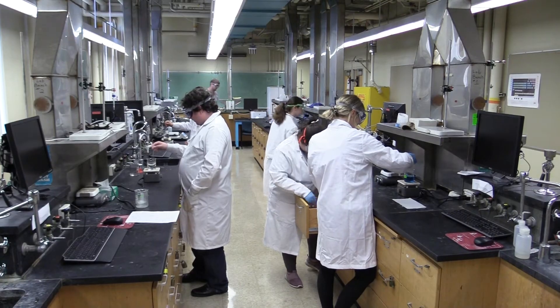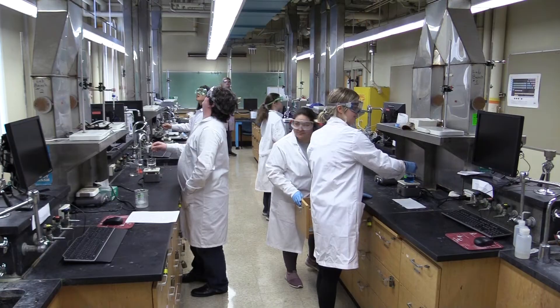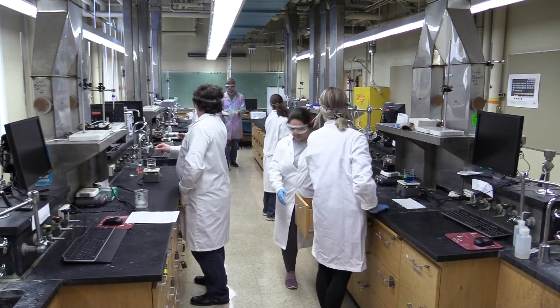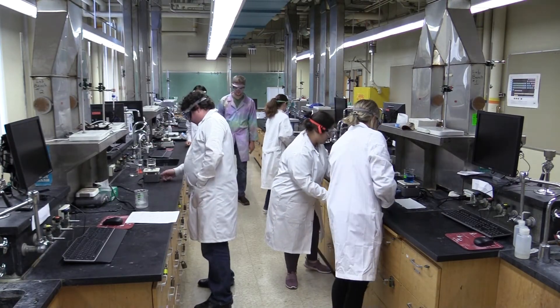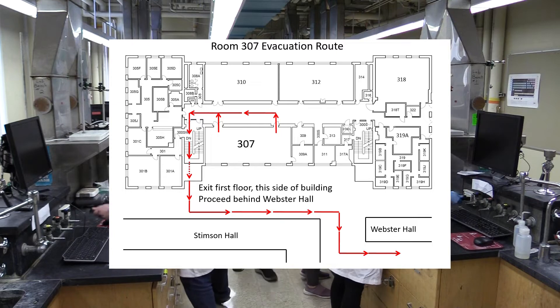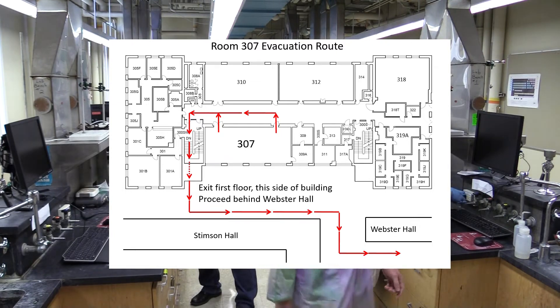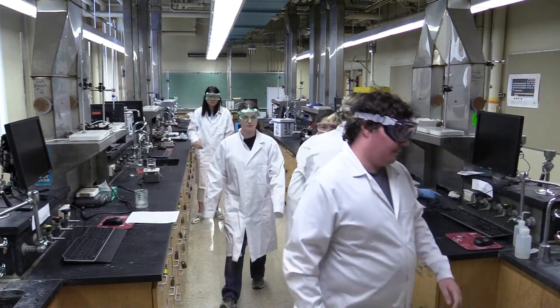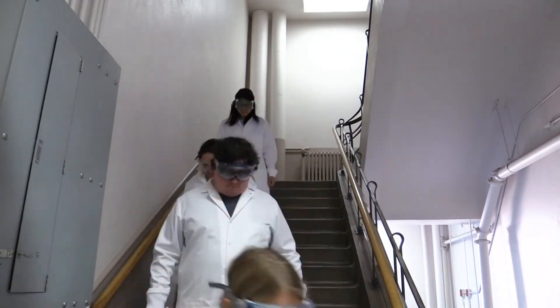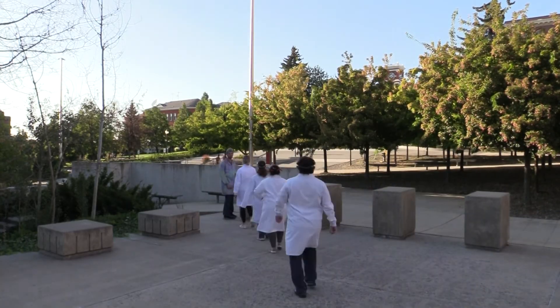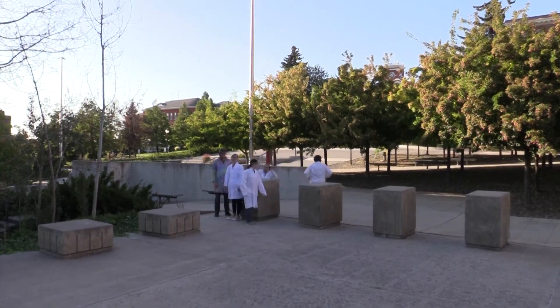If you hear a fire alarm, turn off all the equipment you're working with and get out of the building. Do this calmly and orderly. Each door to your lab room has one of these evacuation maps attached to it that'll tell you the quickest way you can get out and where to go once you are out. Always use the stairs, not the elevator. Once you're out, either get behind Webster or Todd depending on which side of the building you came out on.